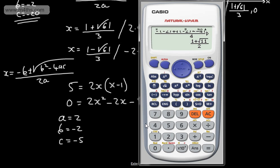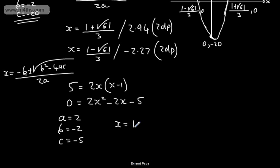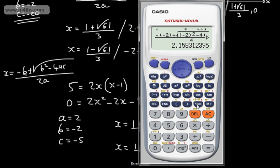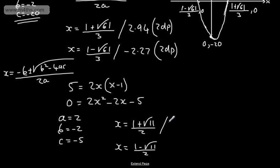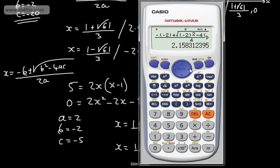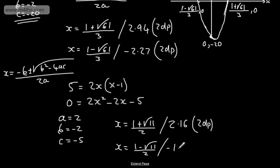This gives x equals 1 plus root 11 over 2 as the exact answer. Switching to the minus gives x equals 1 minus root 11 over 2. As decimals, the first solution is 2.16 and the second is negative 1.16, both given to two decimal places.